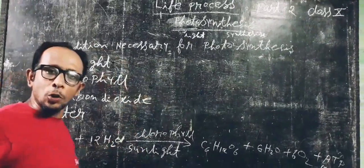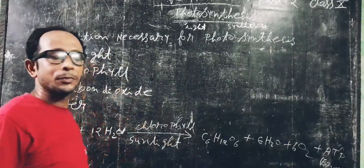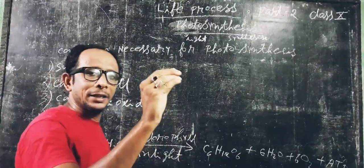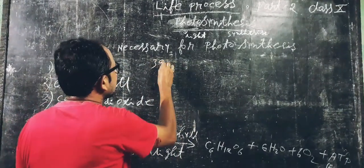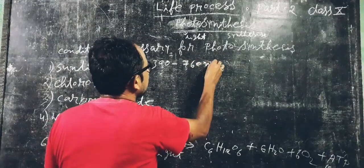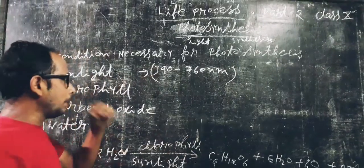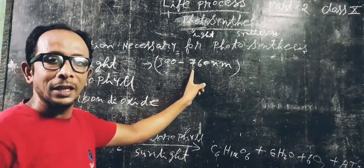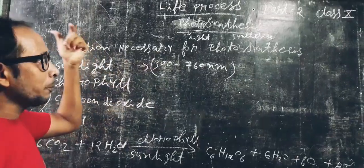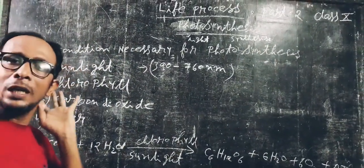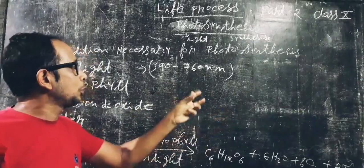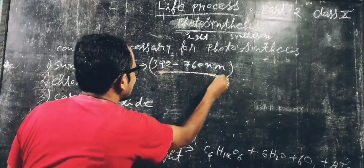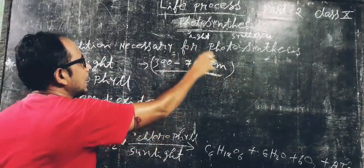Without sunlight, it is not possible for plants to form glucose. Photosynthesis happens in daytime, but any light in the wavelength range of 390 to 760 nanometers can enable photosynthesis. The sun is the ultimate source of light; however, other light sources within the 390 to 760 nanometer range can also support the process.